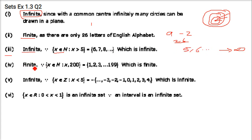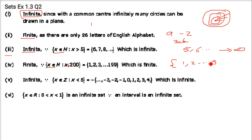The next one is finite. The question is x belongs to N and x is less than 200. Because it is a natural number, we start with 1, 2, and it goes up to 199. So this is a finite set.